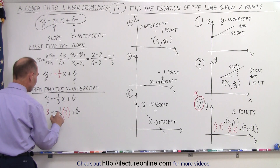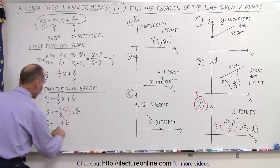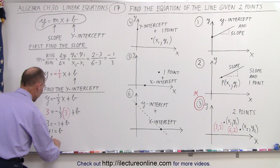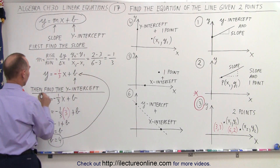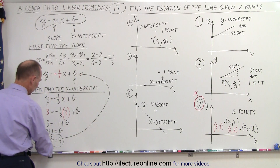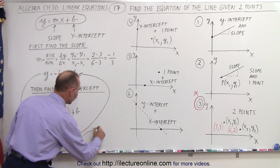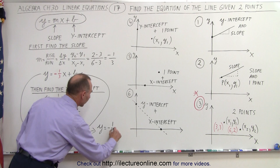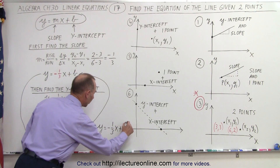Now we solve this for b, and then we have the full equation of the line. Minus 1 third times 3 is minus 1, so we have 3 equals minus 1 plus b. Move the negative 1 across, we get 3 plus 1 equals b, or b is equal to 4. That then goes back into our equation, and the final result is y equals minus 1 third x plus 4.